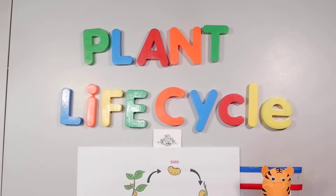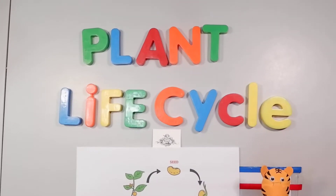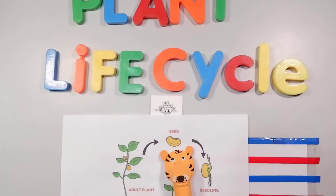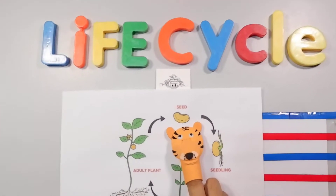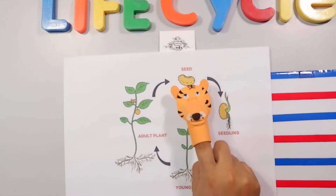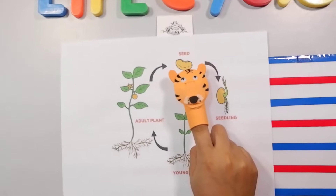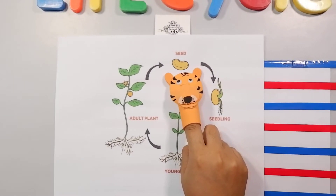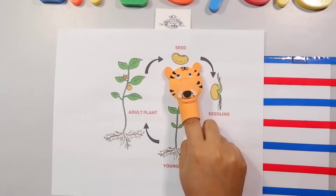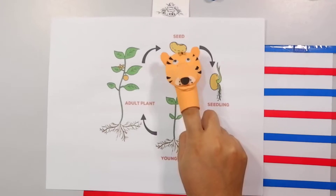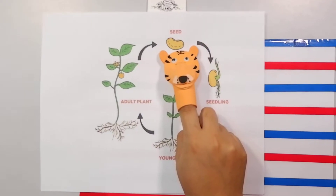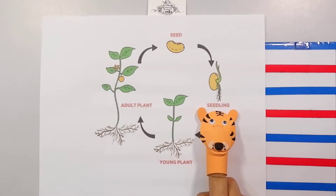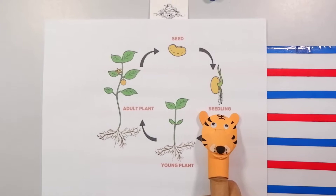Each plant starts from a single seed like this. And when the seed is planted and given the nutrients that it needs, the seed turns into a seedling.